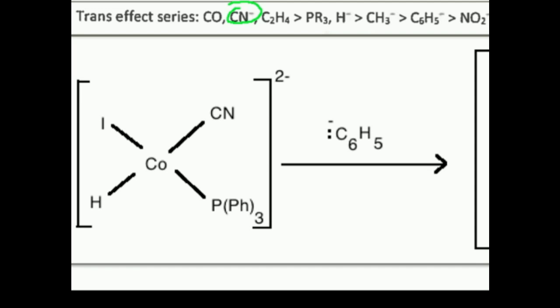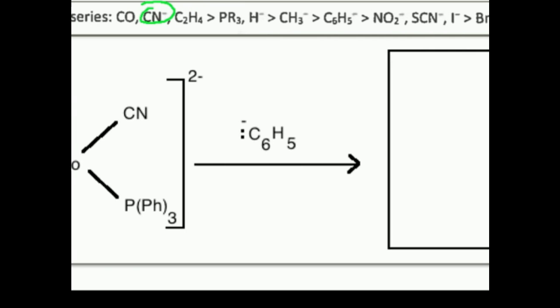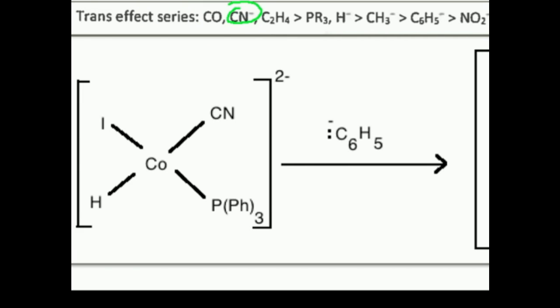Notice we have the P(Ph)3. That's this one. That's less than CN. Hydride is less than CN. And then iodide, which I'll scroll over so you can see that, is much farther to the right. So the point is cyanide, or the cyano group, is going to be the farthest to the left.